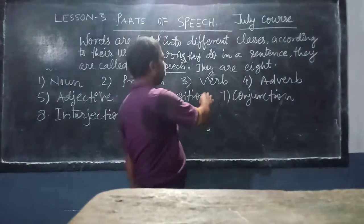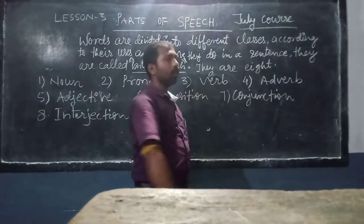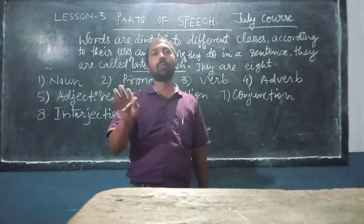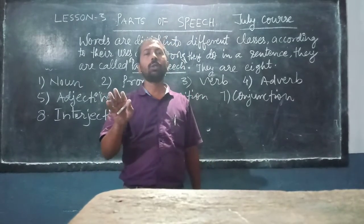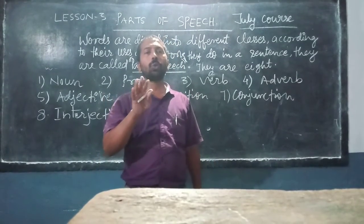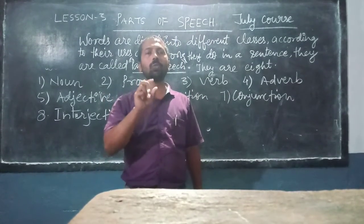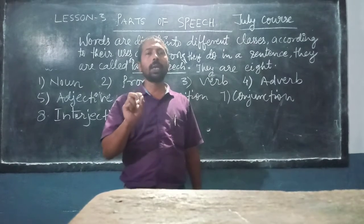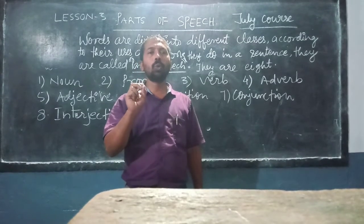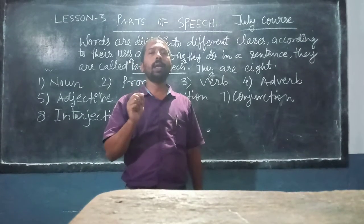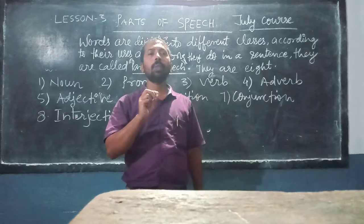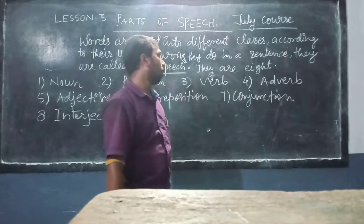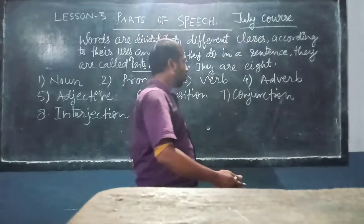Next, verb. Action words are called verbs. The words which show action or work, they are known as verbs. For example: go, play, come, run. It is easy.